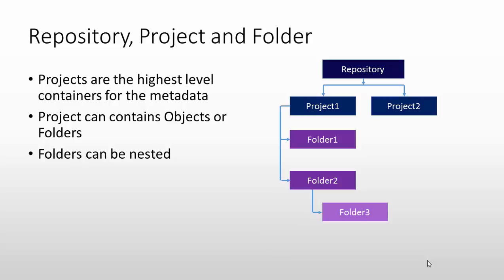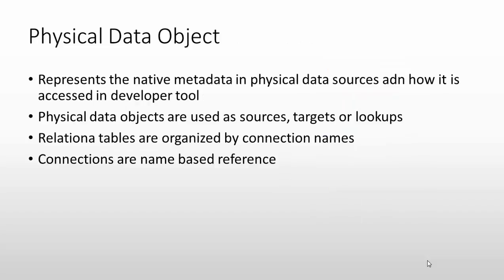The repository is where the metadata is maintained. Inside it we create projects — the highest level. Within a project we create subdirectories or objects, and we can create subdirectories inside those as well. The first object is the physical data object, called a PDO. Source systems and targets are physical components, stored as physical data objects. A PDO represents the native metadata in physical data sources. In the developer tool, PDOs are used as a source, target, or lookup — reference tables are treated as lookups.